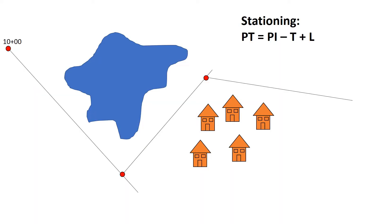Here's our preliminary traverse and we're starting at station 10. We're going to move along in increasing stations and reach our first point of intersection. At that point of intersection we're going to turn from our back tangent to the forward tangent with an intersecting angle to the left. We can measure the distance from station 10 to our first PI — if that's 2,000 feet or 20 stations, we get station 30 for that point of intersection.